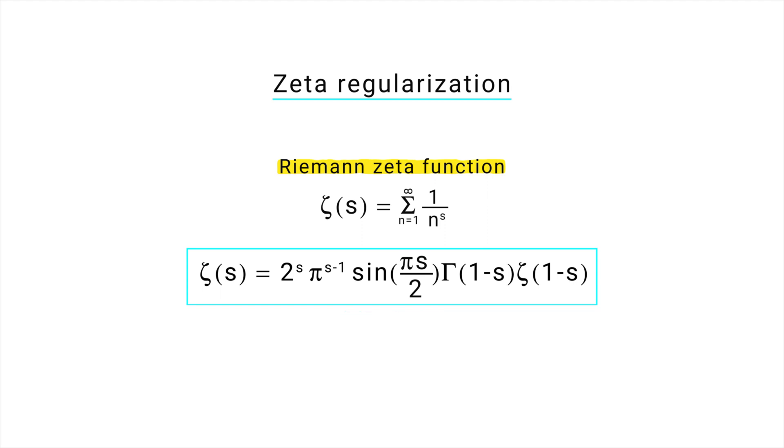Now here comes the magic. What happens if we plug s equal to minus 1 into the formula? Well, we get this. Which simplifies to, zeta function at s equal to minus 1 is minus 1 by 12. So this means that the regularized value of sum of all natural numbers is minus 1 by 12.